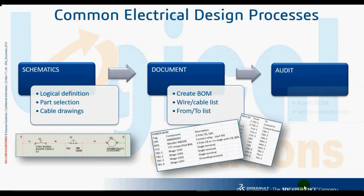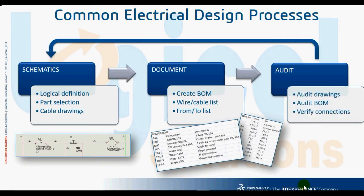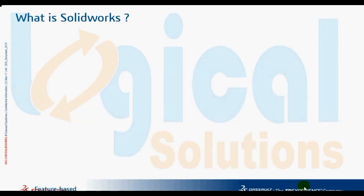The common electrical design process involves three areas: schematic, document, and audit. In the schematic phase, we define logical definitions, how part selection is done, and cable drawing. In the document phase, we create the bill of materials, cable list, and from-to list. In the audit phase, we edit the bill of materials, verify connections, and verify the drawings.